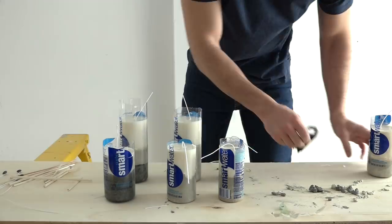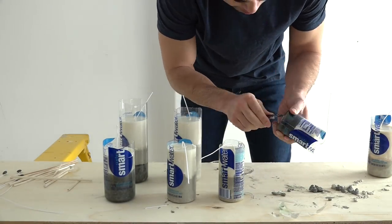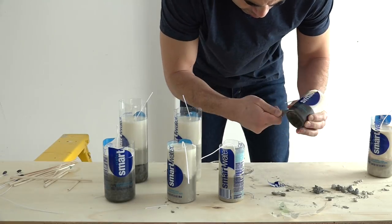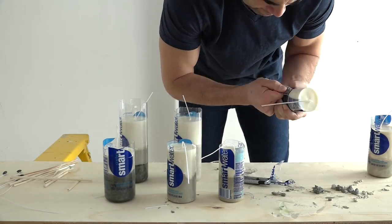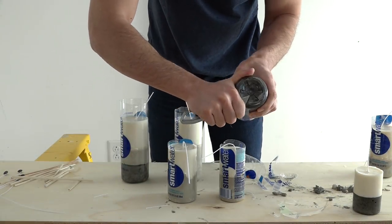After letting the concrete cure for 48 hours I was ready to remove the bottles. I started by taking a really sharp knife and cutting the bottoms off. Now I can just make a few cuts along the top and keep peeling them off piece by piece.